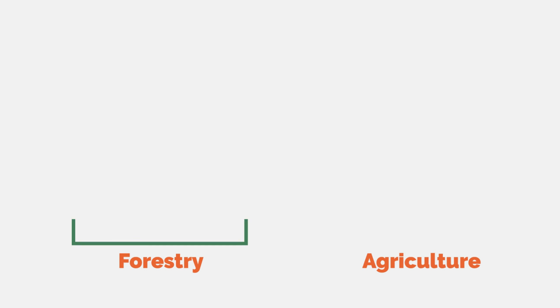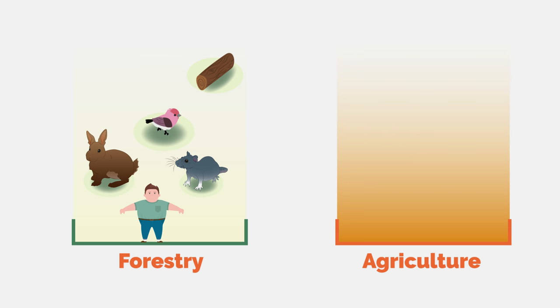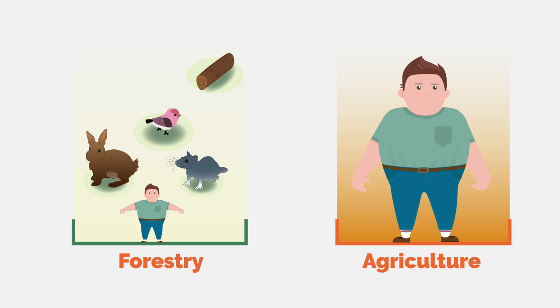Forestry and agriculture also differ in that forestry usually manages the ecosystem for the benefit of several species, while agriculture manages it for the benefit of a single species. Foresters manage not only for the lumber that will eventually be harvested, but the approach may also include strategies to enhance recreational use of the area, or to reintroduce locally endangered or extinct species through conservation practices.